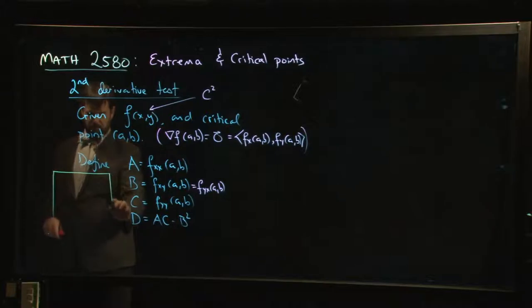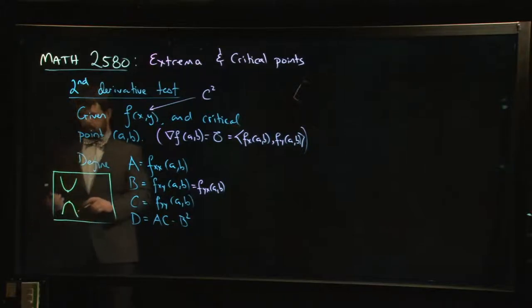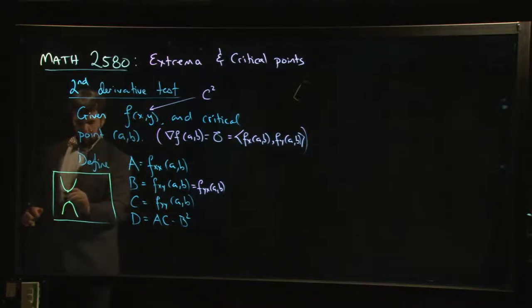Remember that in Calc 1, if you have a minimum versus a maximum, at a minimum the tangent line is horizontal. So f prime of a is zero.